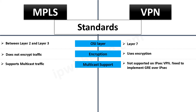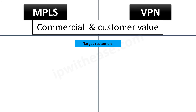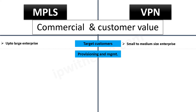In scenarios where it's essential to use multicast, GRE over IPsec is provisioned, which has its own caveats. The target customers for MPLS are primarily large enterprises; on the contrary, VPN is preferred in the case of small and medium-sized enterprises. Provisioning and management of MPLS devices are performed by the service providers, while VPN gateways and endpoints are mostly managed by customers.